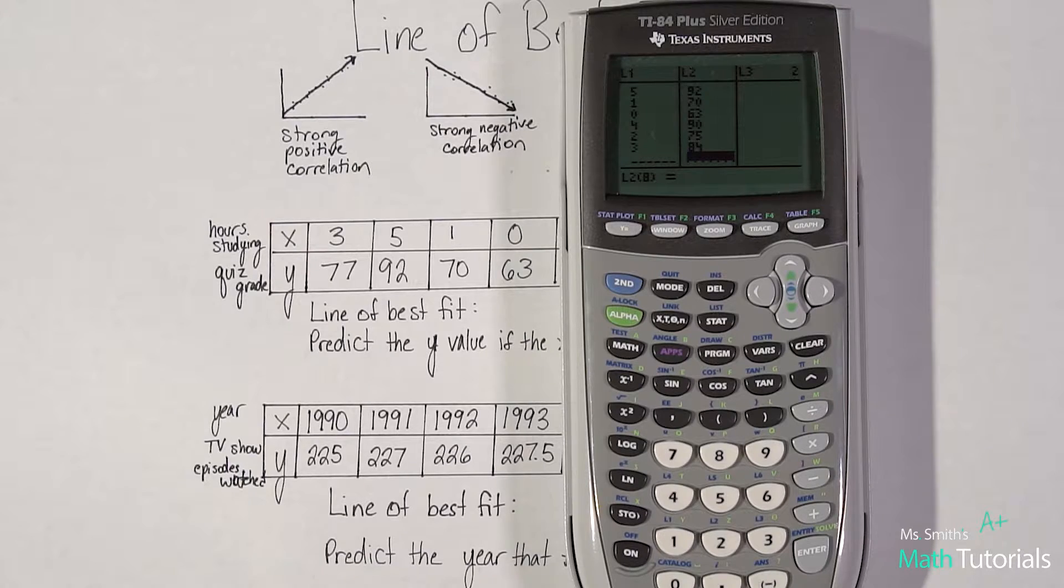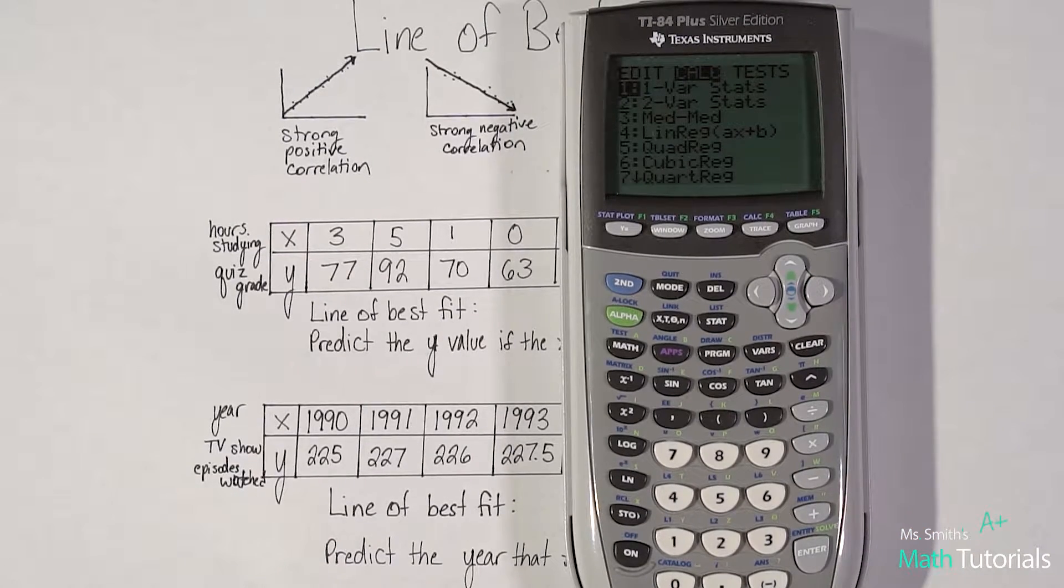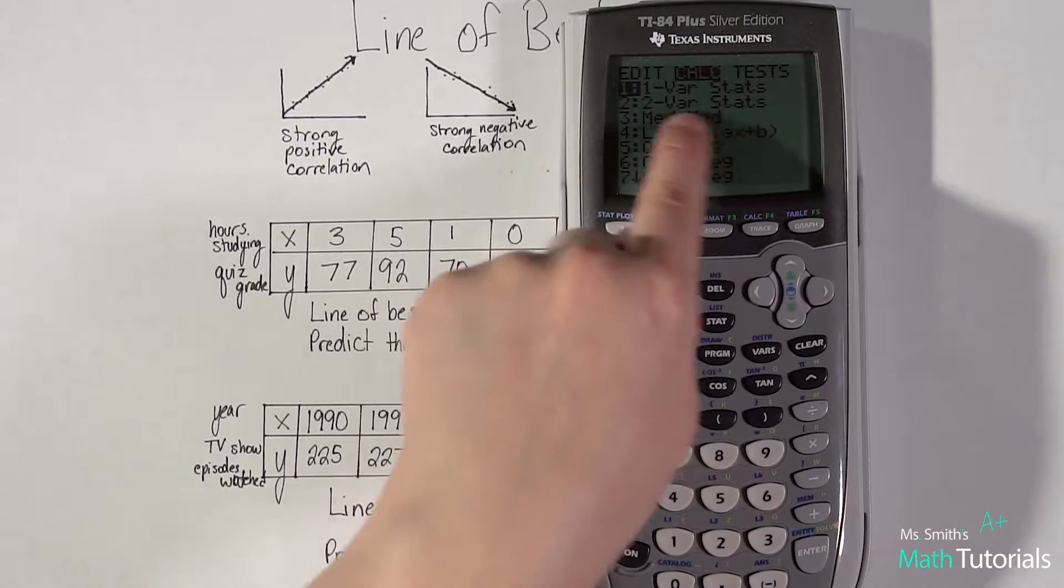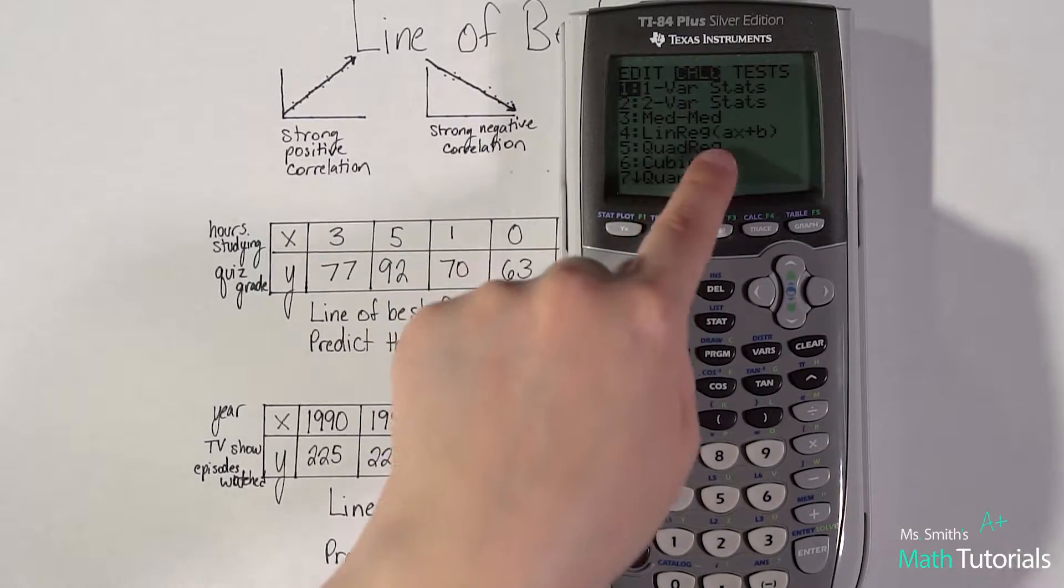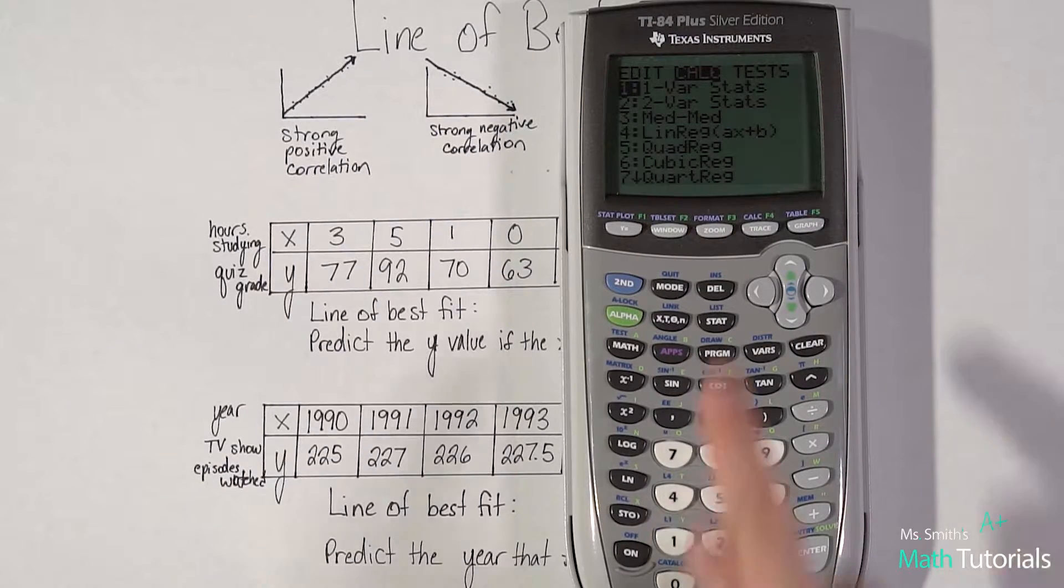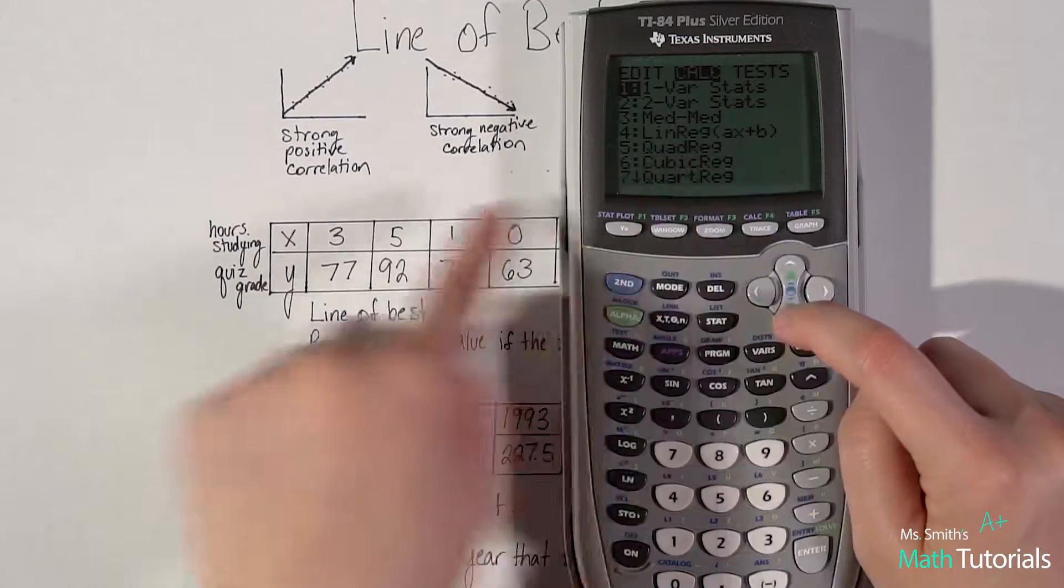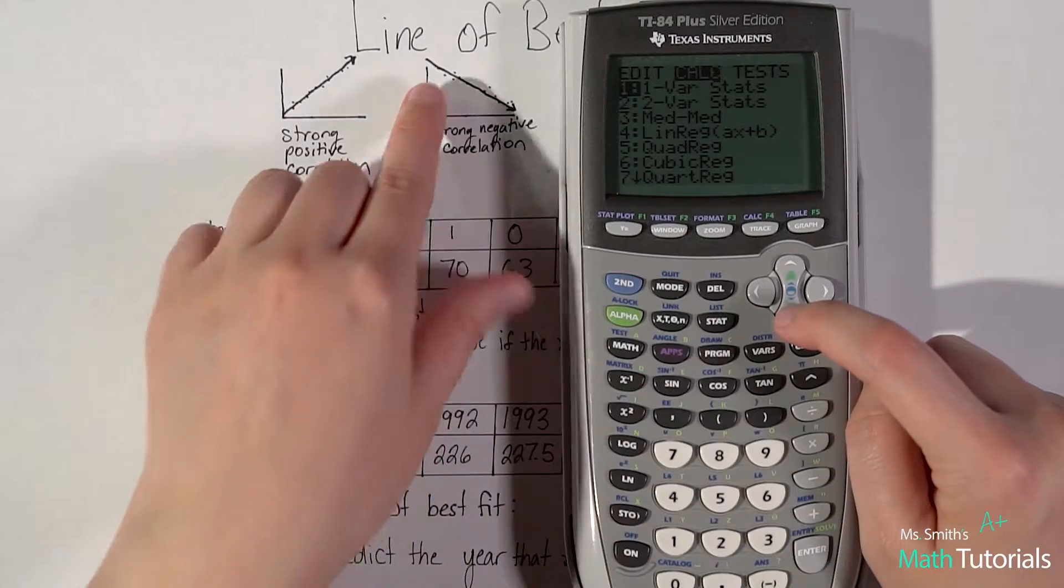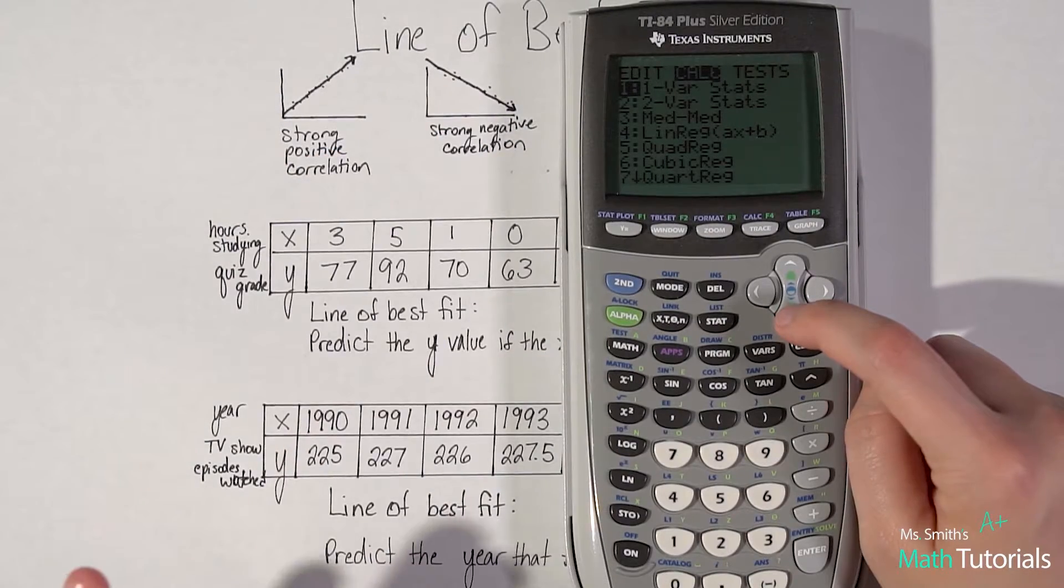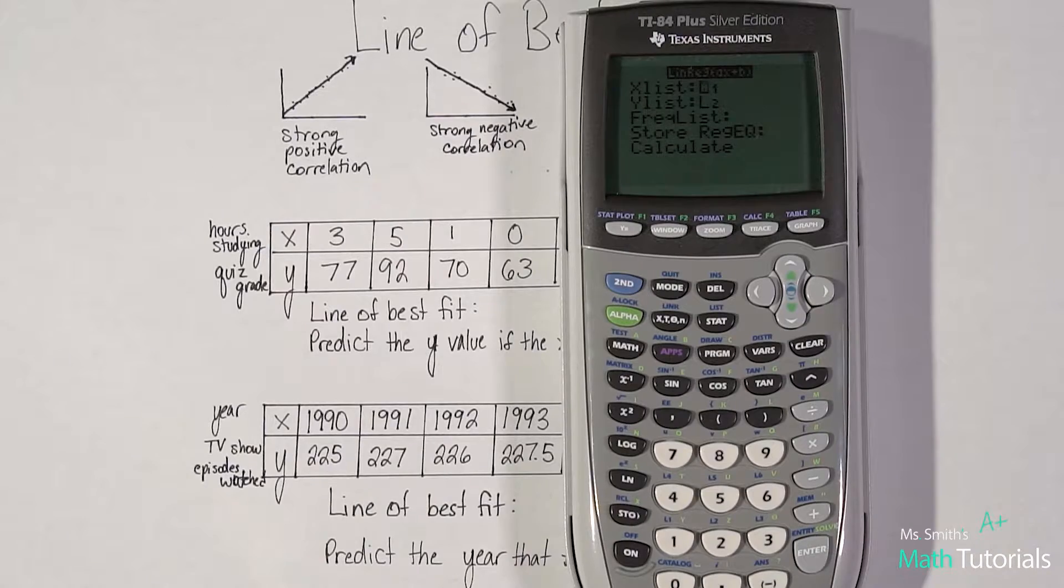Once we've got that data entered in, you're going to hit your stat button. You're going to move over to the calc. Now, we've been using this to find the variable stats. But over this lesson and also the next lesson, we're going to be seeing some other things we can do with this calc function. We want to go down to this linear regression. This is linear data, and when we're doing line of best fit, all of our data will be linear. So, we would go down to four, or you could scroll down or just hit four.